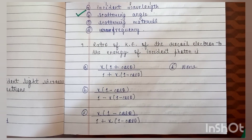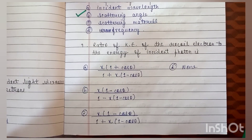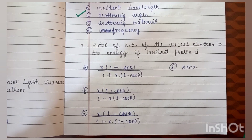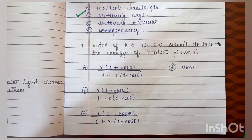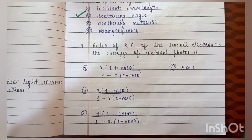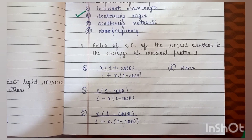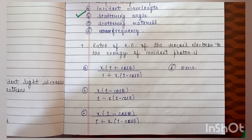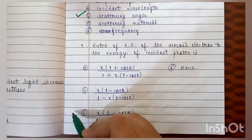Question number 9: the ratio of kinetic energy of the recoil electron to the energy of the incident photon is? The correct answer is C.